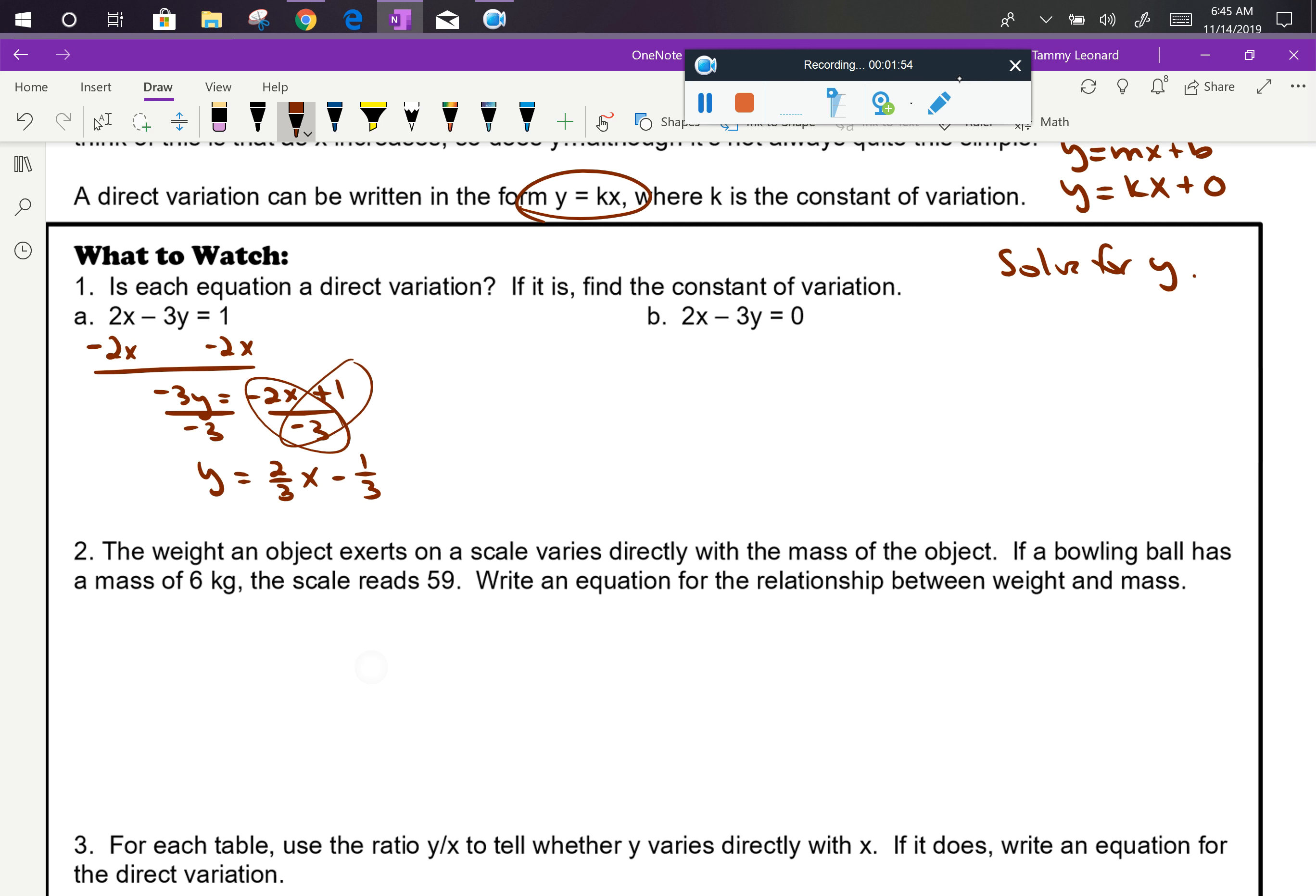When I look at that and I compare it to y equals kx, notice there's a number here where we should just have zero. So this is not a direct variation because it doesn't follow the format. This would not pass through the origin.